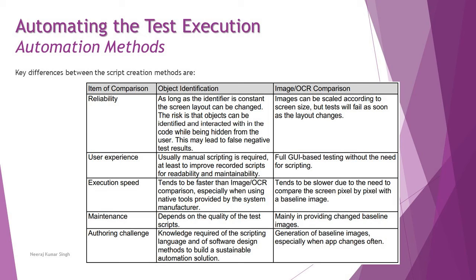Regarding authoring challenges: for object identification, knowledge of the scripting language and software design methods is required to build a sustainable automation solution, since you will be writing, designing, formatting, integrating, and customizing scripts. For image comparison, the challenge is generating baseline images, especially when the app changes often — for example, a game like Candy Crush shows different colors and pictures each time, making it difficult to map every unique image.